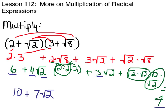This is Lesson 112 in Saxon's Algebra I, 3rd Edition, and this is more on multiplication of radical expressions. Radical means it's got that little square root sign somewhere in there. We've done some multiplication of these radicals, but we're going to take it a step further today.